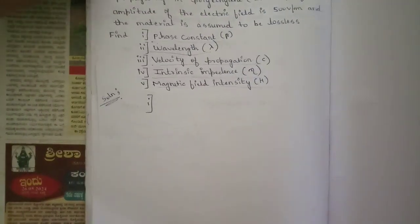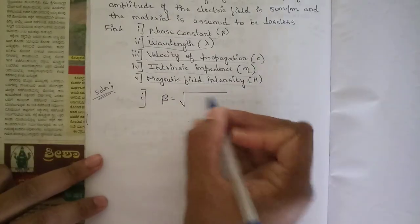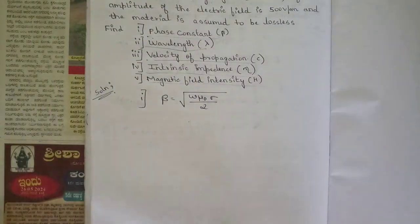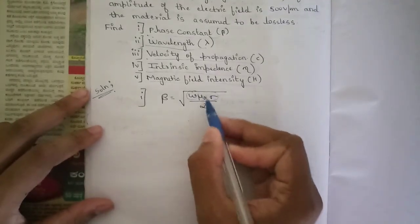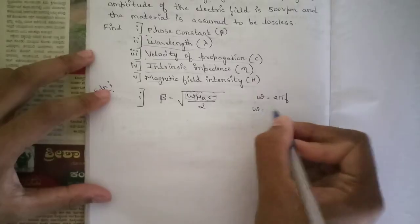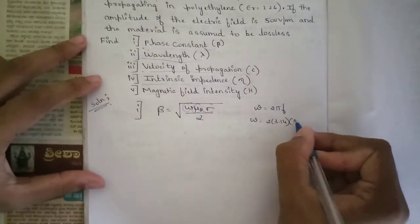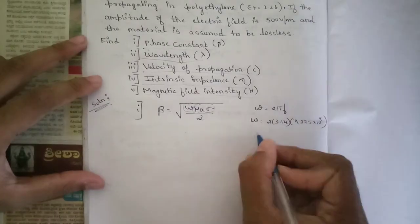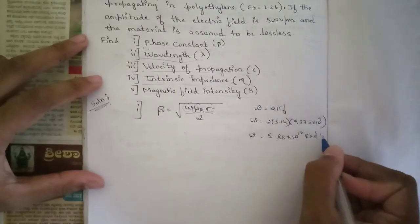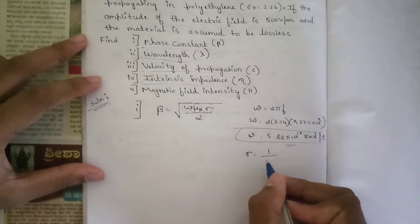First, let's find the phase constant. The formula for phase constant is β = ω√(μ₀) × σ/2. To find β, we need ω and σ. The standard value of μ₀ is 4π×10⁻⁷. Omega equals 2πf, so ω = 2 × 3.14 × 9.375×10⁹, giving ω = 5.88×10¹⁰ rad/s. Similarly, σ = 1/η, where η is the intrinsic impedance.